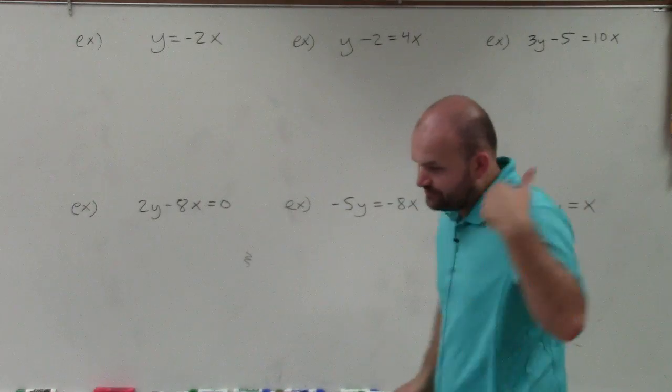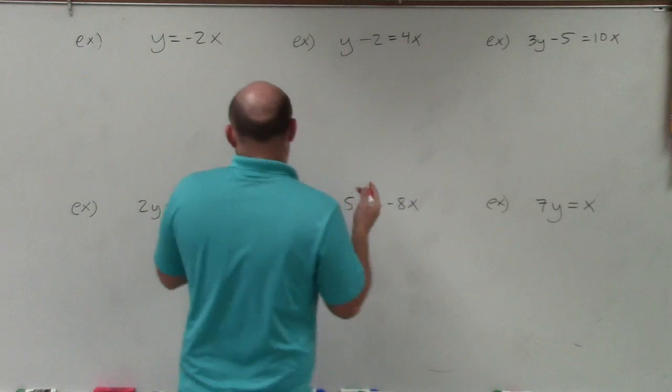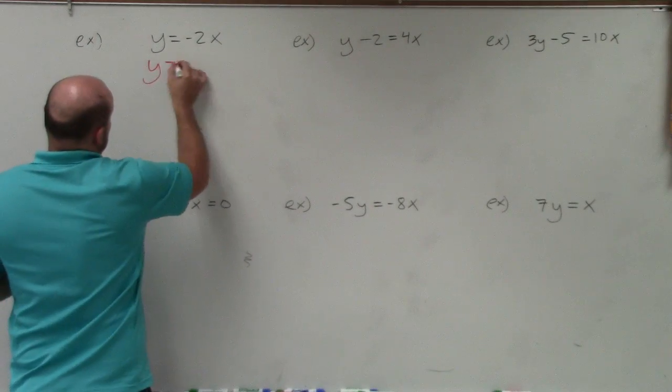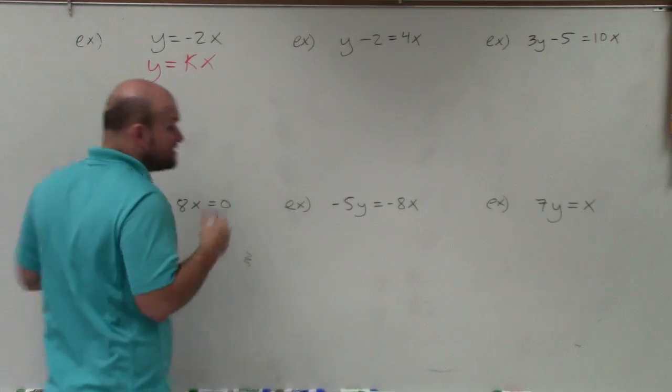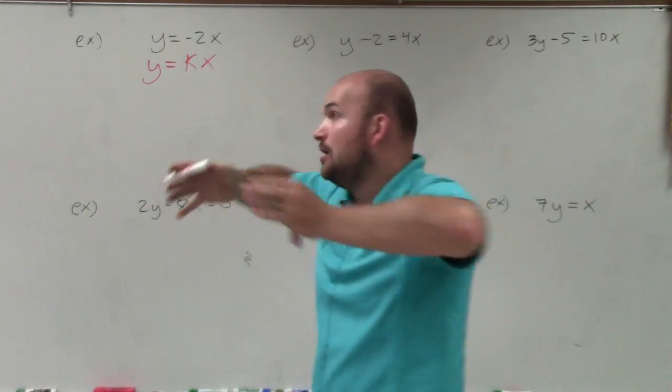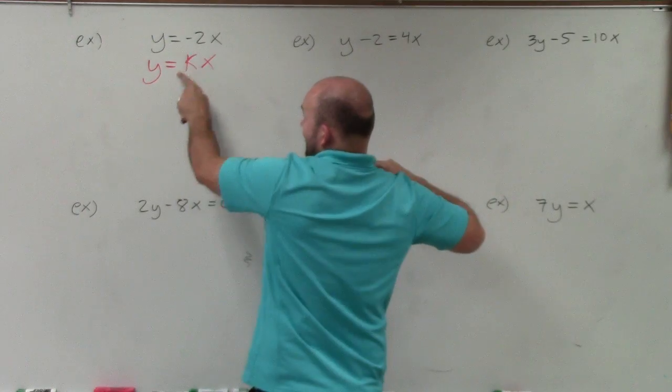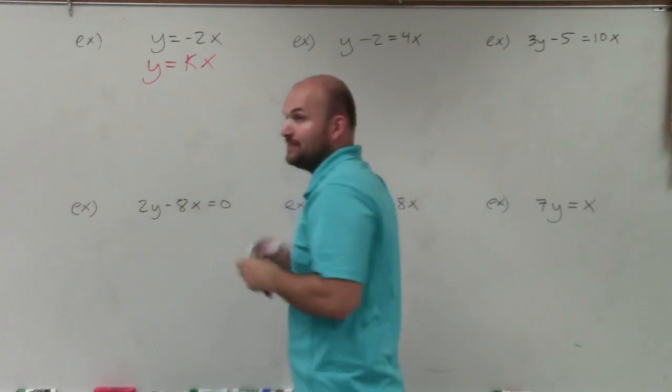The main important thing whenever we're dealing with direct variation, I would highly recommend you just write down what exactly represents direct variation, or what is the equation for direct variation. And that is y equals kx. So now that you have it written down right in front of you, we can determine as long as we have an equation in this format, y equals kx, then it represents direct variation.